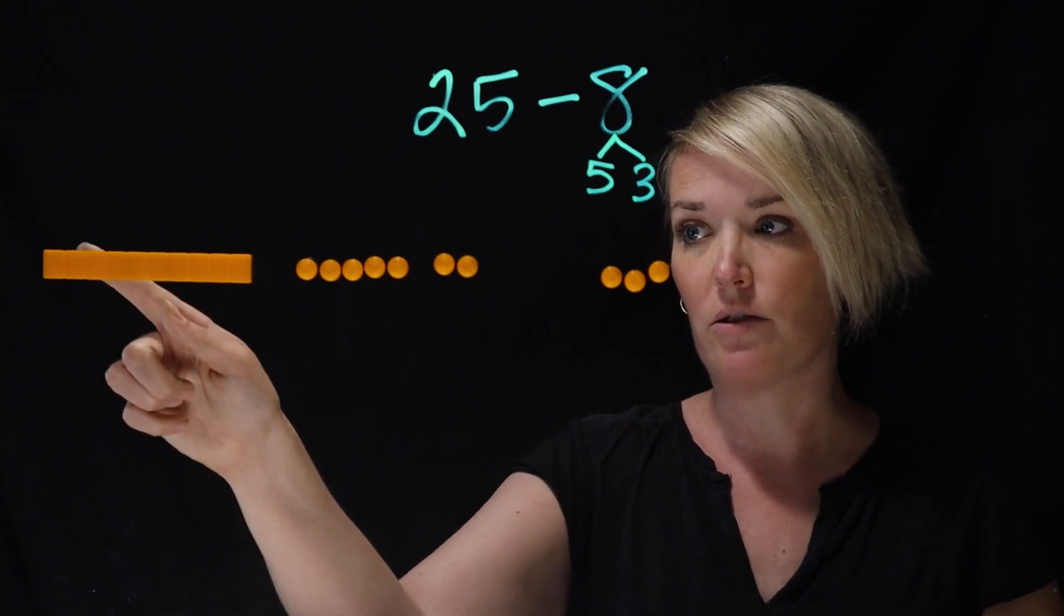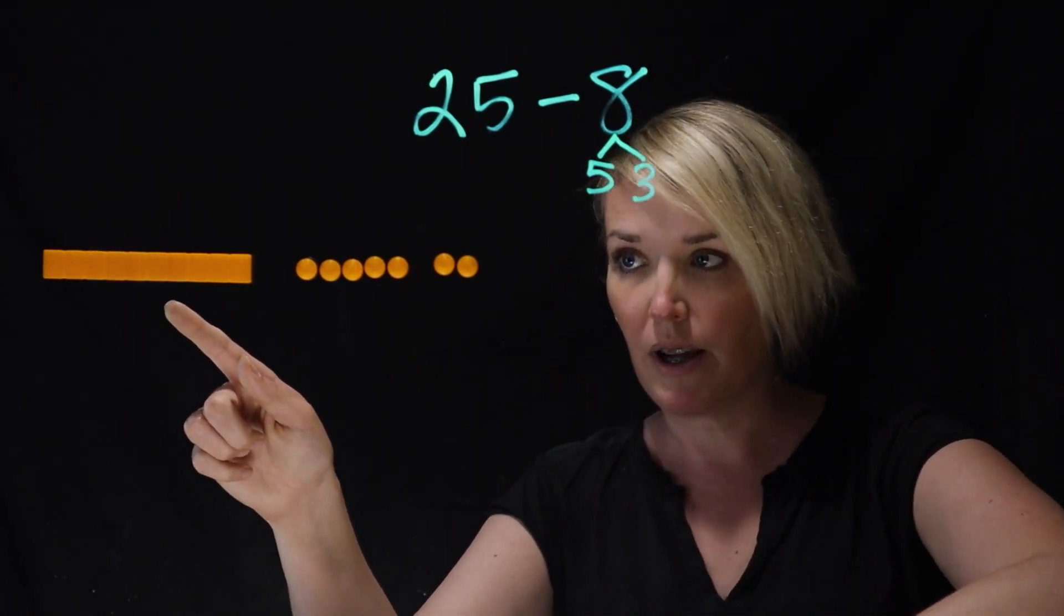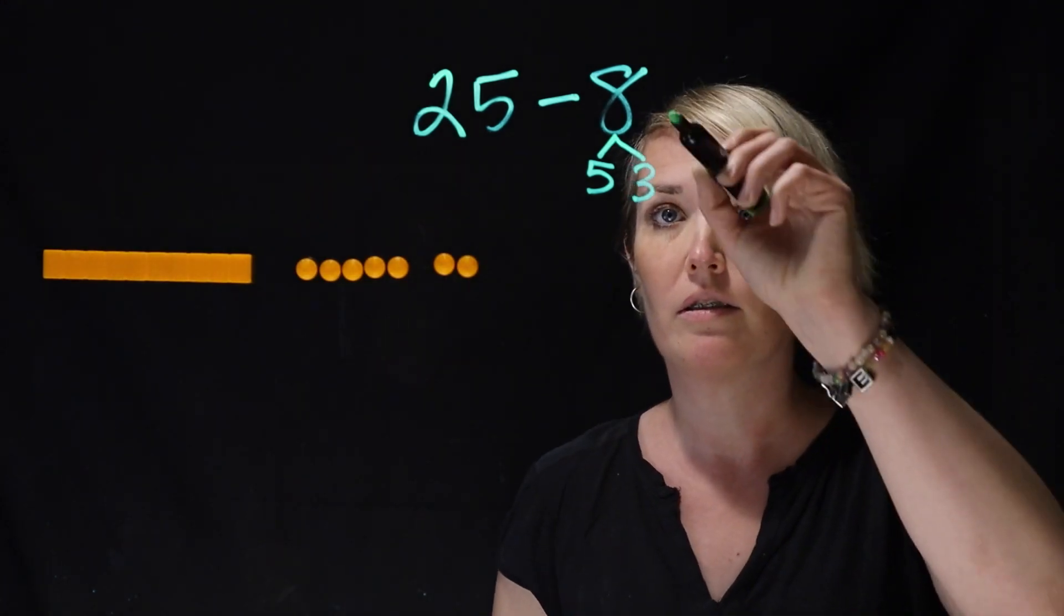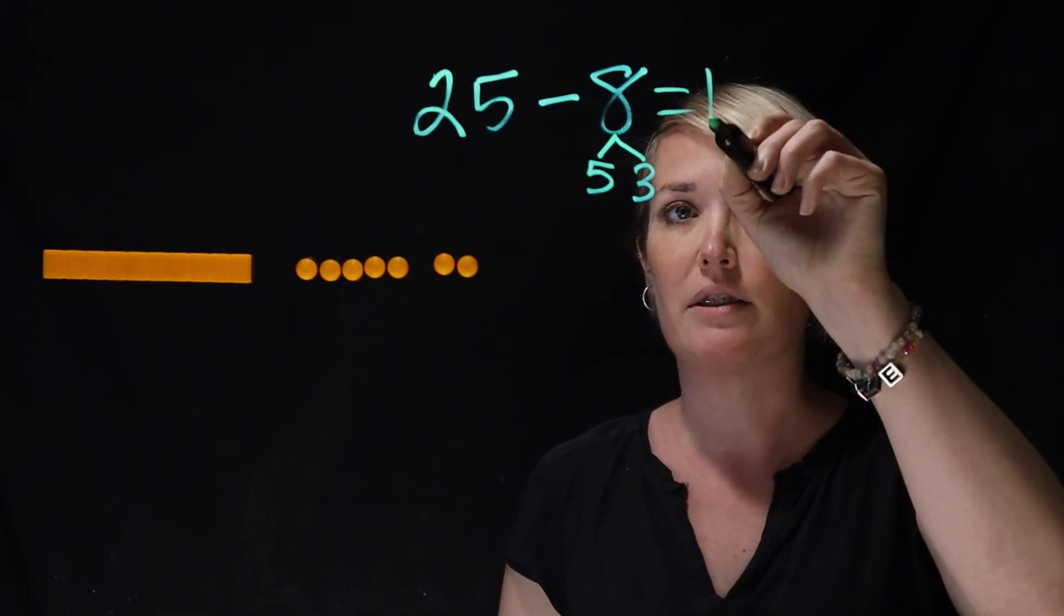So, and then the 10 here. So it's actually, when she takes that away, it's 10 plus 7, which is 17. So 25 minus 8 is 17.